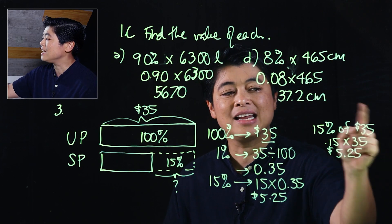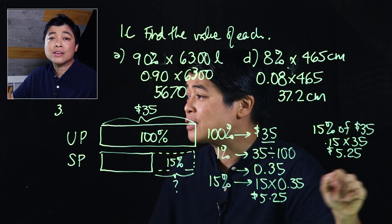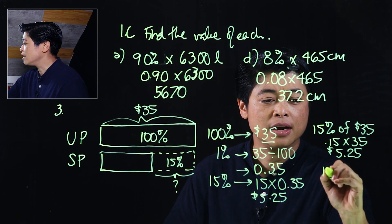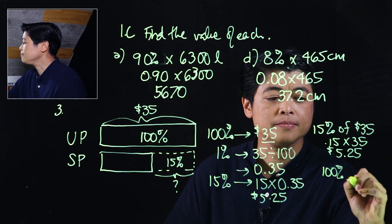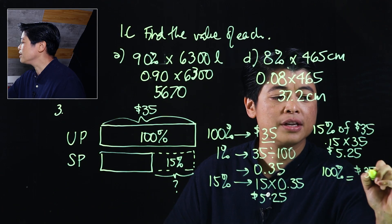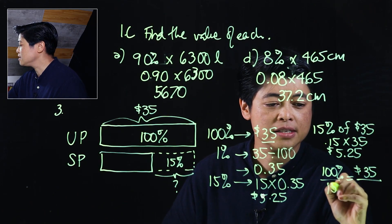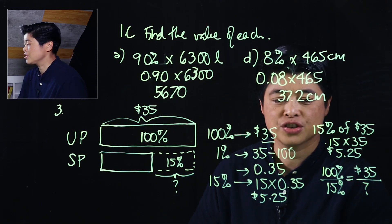But yet another way of solving, so this is ideal if calculators are allowed. But if calculators are not allowed, then the way that we would want to do this is 100% is equal to $35. The question is what is 15%? This is the question.